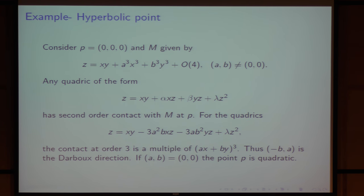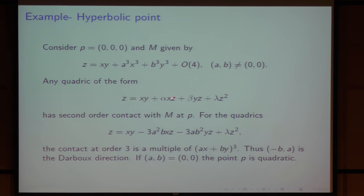We can also do this at a hyperbolic point, but Ronaldo did this calculation in his talk, so I just repeat it here. If you have the normal form in asymptotic coordinates, then all these quadrics have second-order contact. But for the quadrics with alpha equal to minus 3a²b and beta equal to minus 3ab², the contact functions are a perfect cube. The root of the perfect cube is the Darboux direction. In the hyperbolic case, this is just one direction. Again, if AB equals zero, then we have a quadratic point.